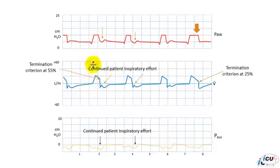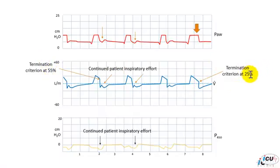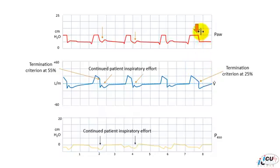In order to correct this phenomenon, you need to prolong inspiration on this breath by decreasing the flow termination level from 55% down to 25% or lower. By decreasing the cycling mechanism to 25% of the maximum inspiratory flow, it will take a longer time to terminate the breath. This will allow the patient to remain in inspiration within the ventilatory breath, and the patient will exhale in synchrony with the ventilator cycling mechanism.